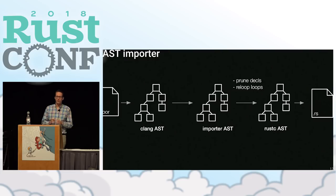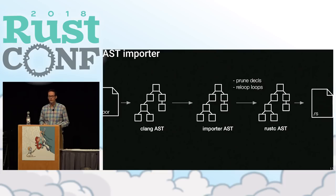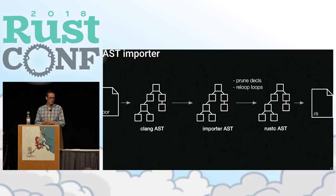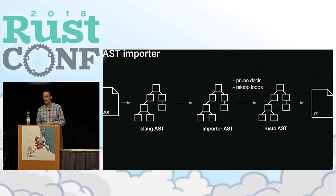In the second stage conversion, we prune C declarations that we don't see being used in the current translation unit — because even in hello world you'll probably include a header file for printf, which pulls in a lot of other declarations you don't necessarily use. We also look at loops that contain unstructured control flows such as gotos and try to generate valid Rust code for that.